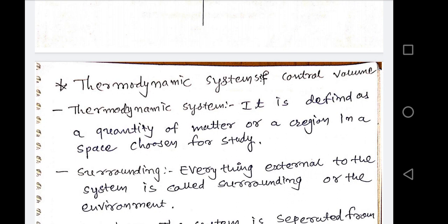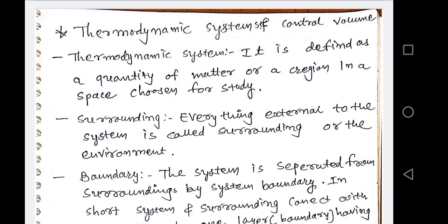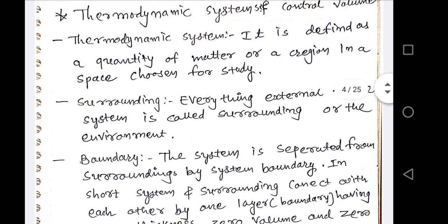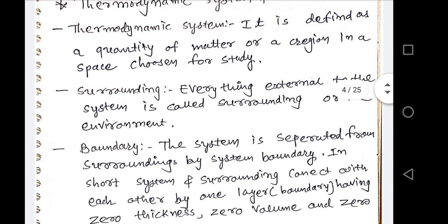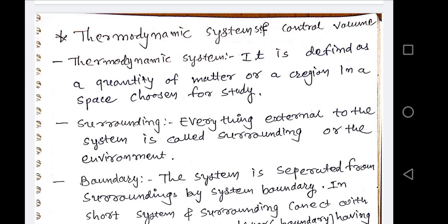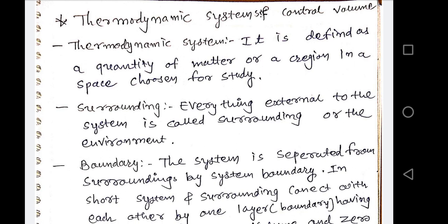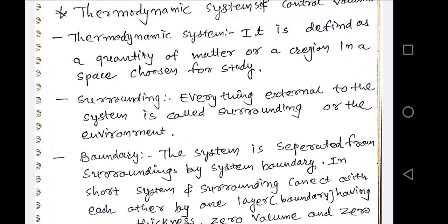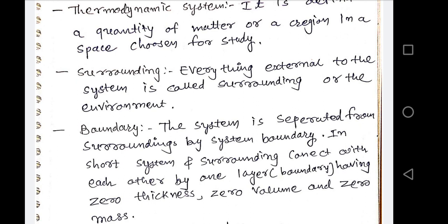Next and very important for our syllabus: thermodynamic systems and control volume. A thermodynamic system is defined as a quantity of matter or a region in the space which is chosen for the study. Suppose you are sitting in a room with many substances — you choose any one substance out of them, study it, and that is your system. It is known as a thermodynamic system.